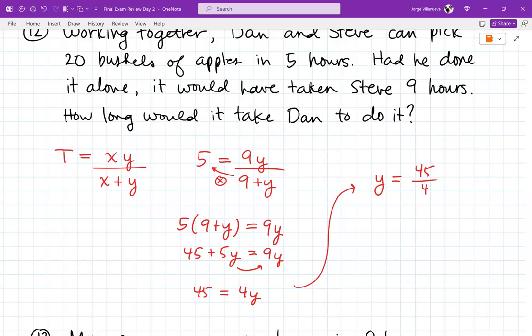In order to solve for y, I'm just going to divide both sides by 4. So I get that y equals 45 divided by 4. Let's just kind of work this out. 45 divided by 4, that's 11 with remainder 1. So it's 11.25 hours because one-fourth is 0.25. And that's going to be our answer for that.